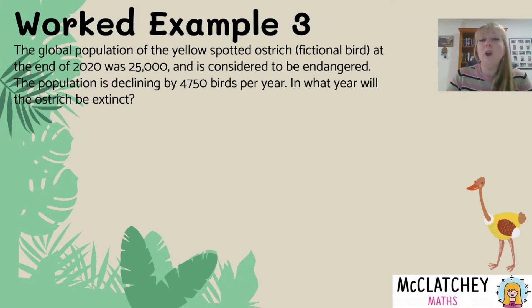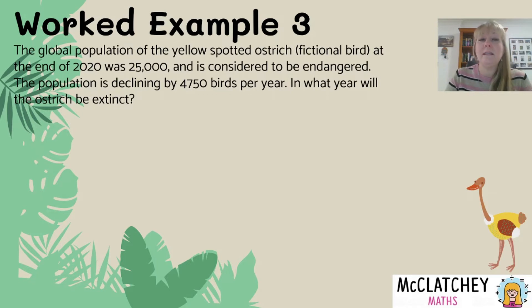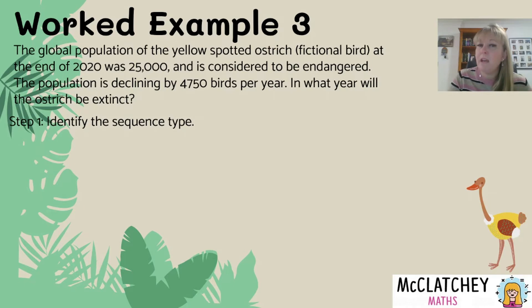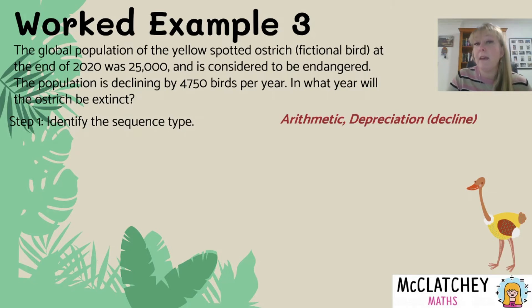In our third worked example, the global population of the yellow spotted ostrich — a fictional bird — is 25,000 at the end of 2020 and is considered endangered. The population is declining by 4,750 birds per year. In what year will the ostrich be extinct? You need to unpack the question and decide: arithmetic or geometric sequence? Since it's declining by a fixed number, there's a common difference — it's arithmetic, but this time a decline model. Because the population is decreasing, we can use our depreciation formula. Instead of a plus, we use subtraction.